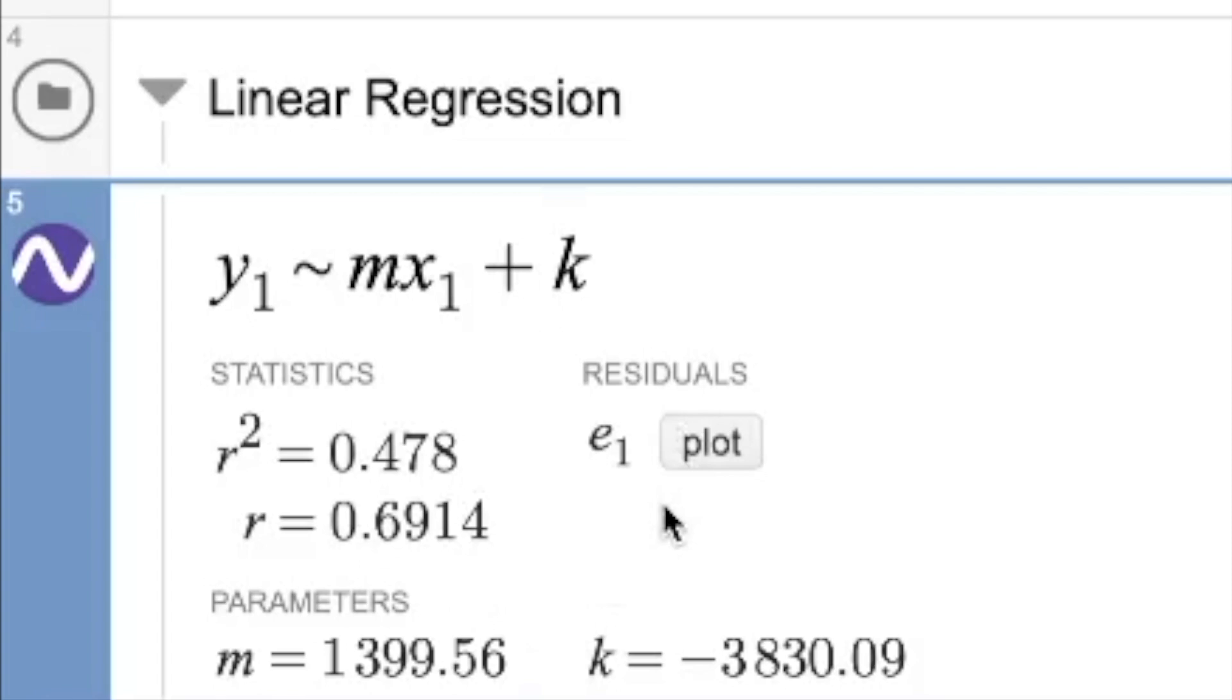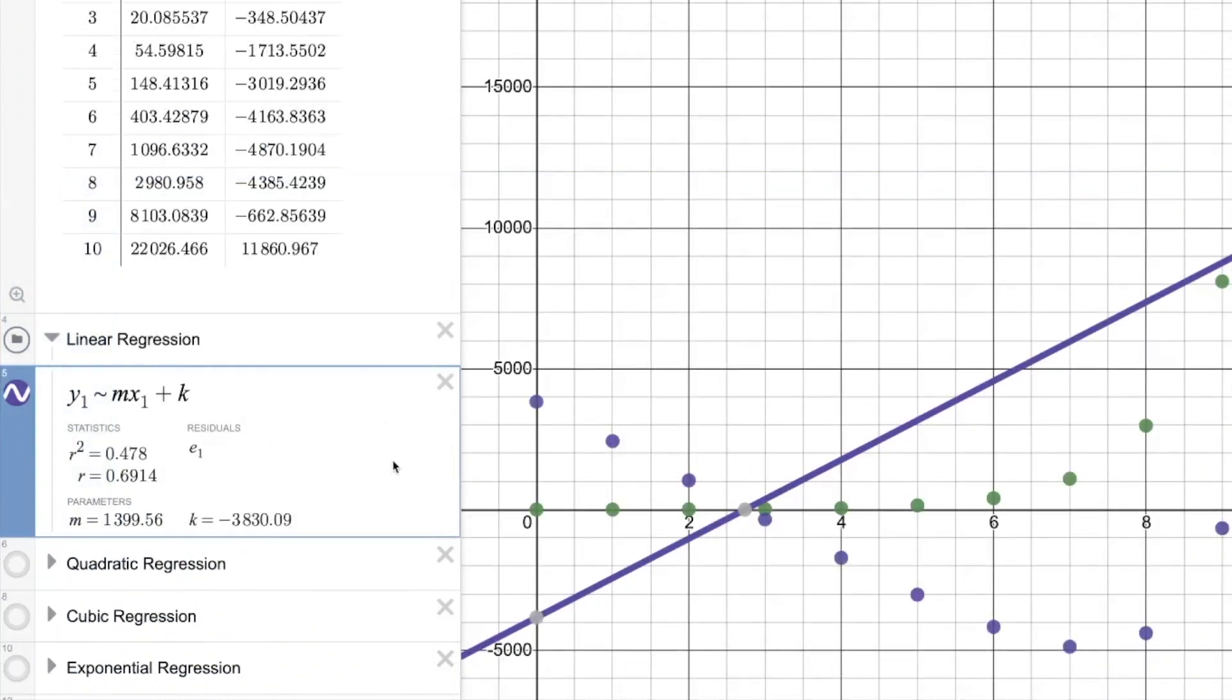We can also look at the residual plot by clicking on plot next to this. The main thing about a residual plot, shown here in purple dots, is that if there's a pattern in your residual plot, then that means that was not a very good choice for the type of regression to use. You're going to want to use a different type of regression.